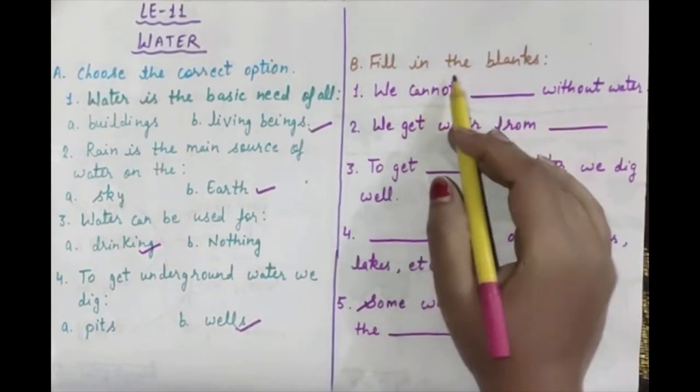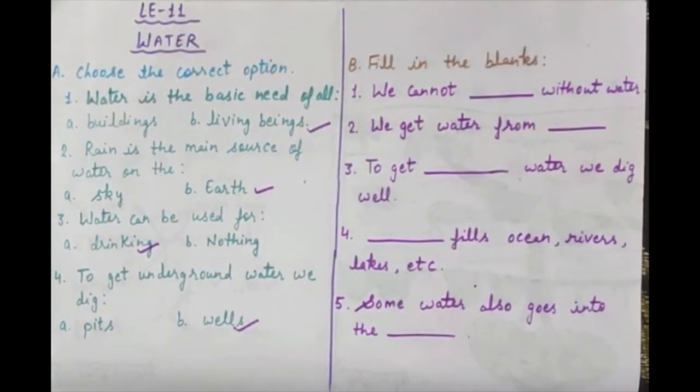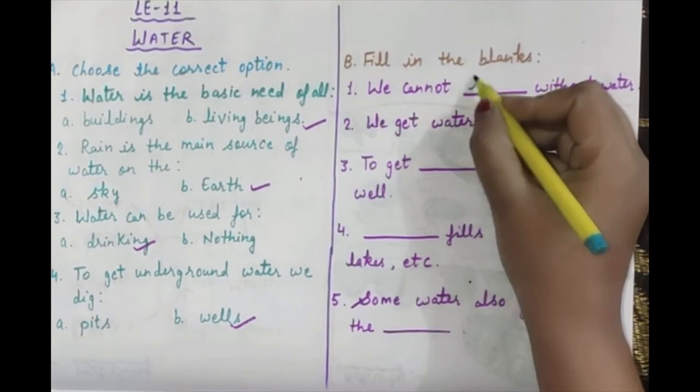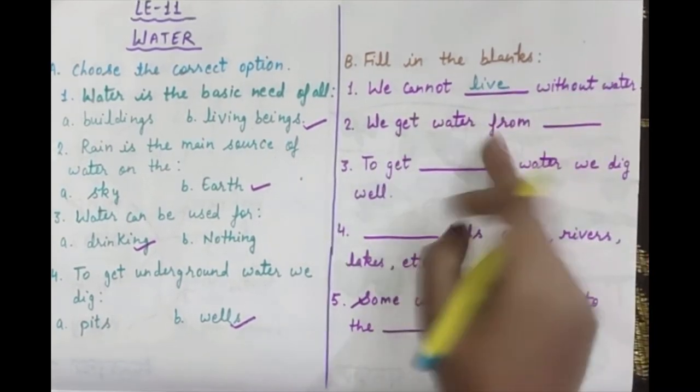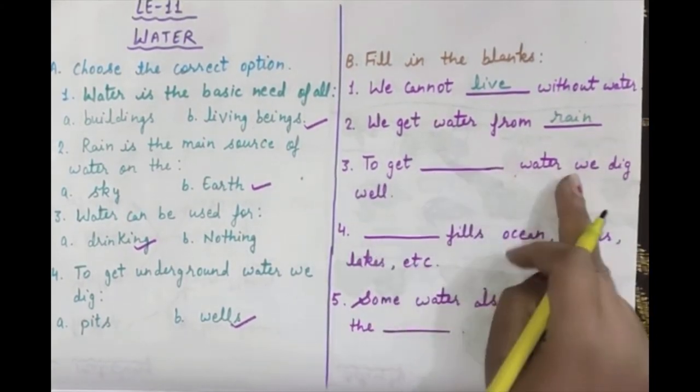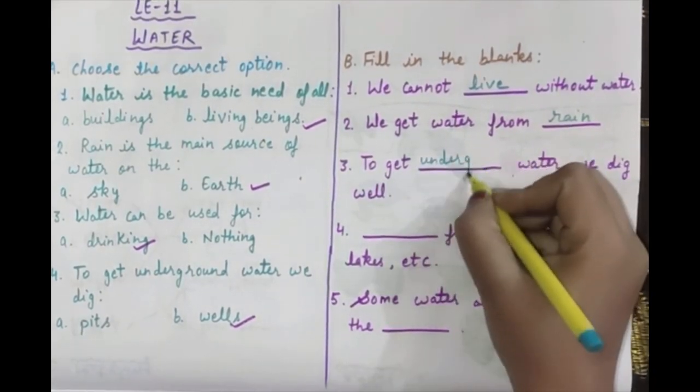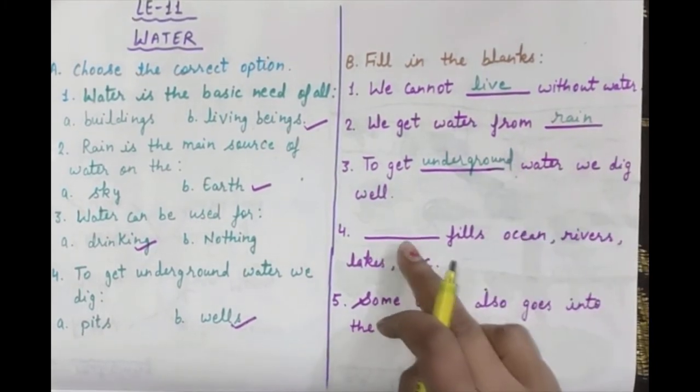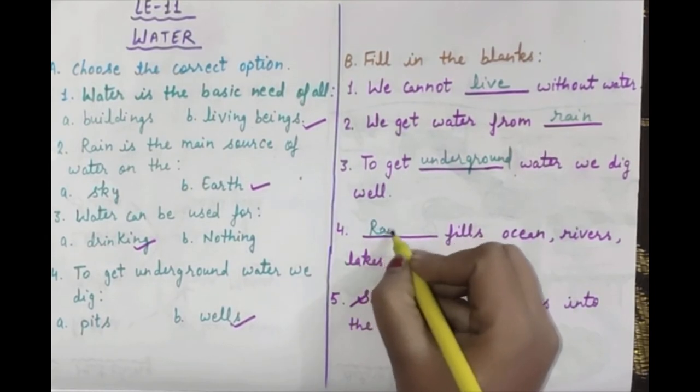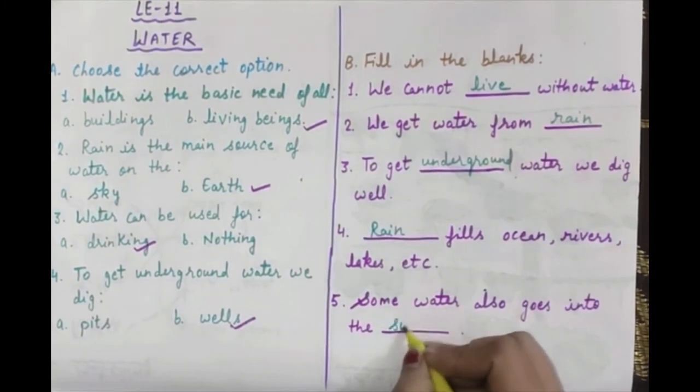Next is fill in the blanks. We cannot blank without water - we cannot live. We get water from rain. To get blank water, we dig wells - underground water. Blank fills oceans, rivers, lakes - rain. Some water also goes into the soil.